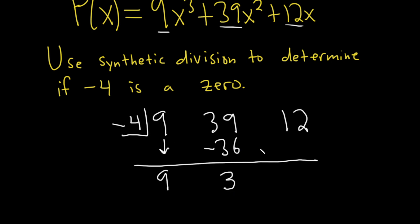Then you multiply 3 times negative 4 is negative 12. Then you add, and you get 0. Yes! That's really good. So the answer is yes, because we got 0.